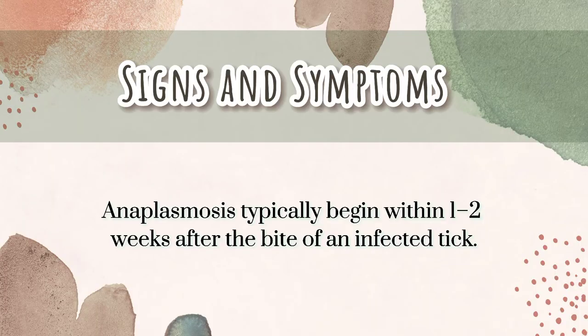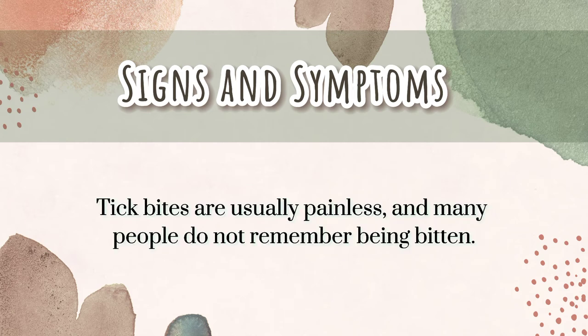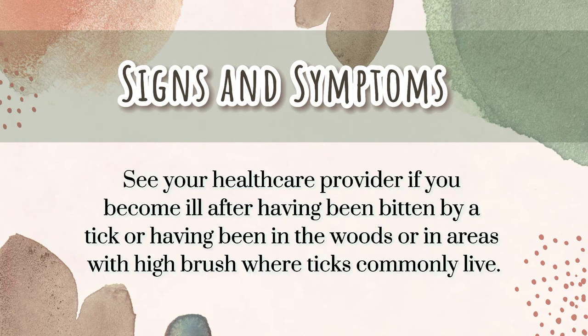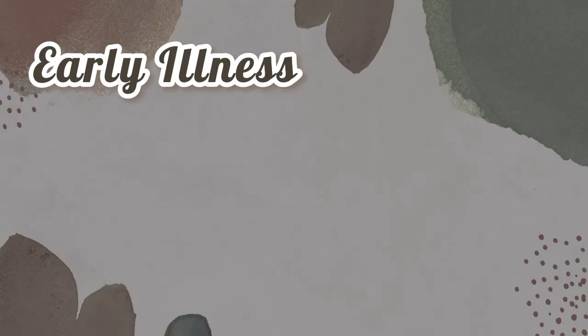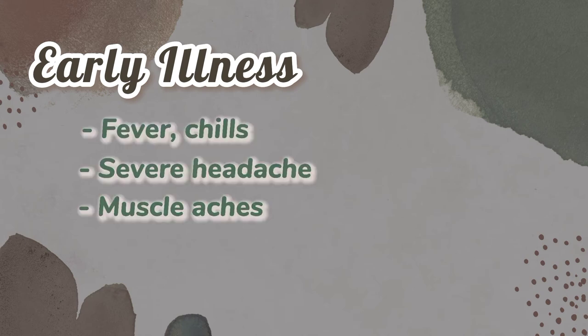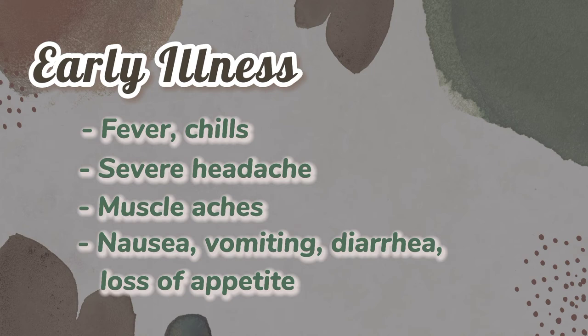For the signs and symptoms, anaplasmosis typically begins within one to two weeks after the bite of an infected tick. Tick bites are usually painless and many people do not remember being bitten. See your healthcare provider if you become ill after having been bitten by a tick or having been in the woods or areas with high brush where ticks commonly live. Early signs and symptoms are usually mild or moderate and may include fever or chills, severe headache, muscle aches, nausea, vomiting, diarrhea, and loss of appetite.